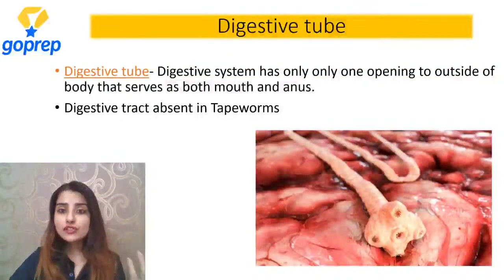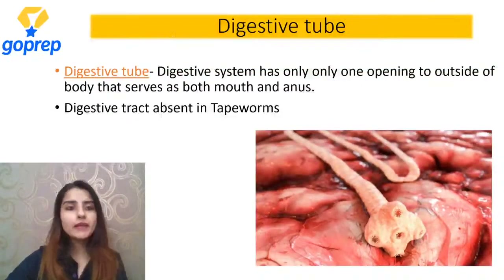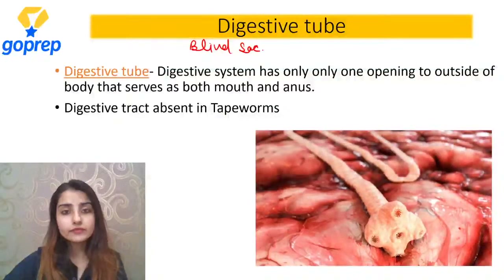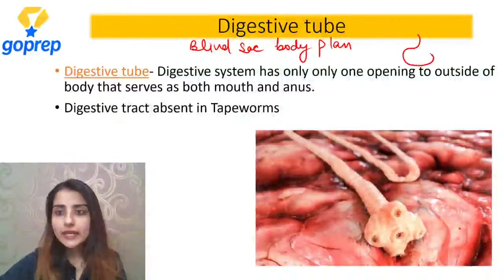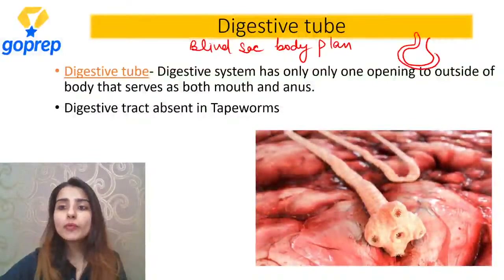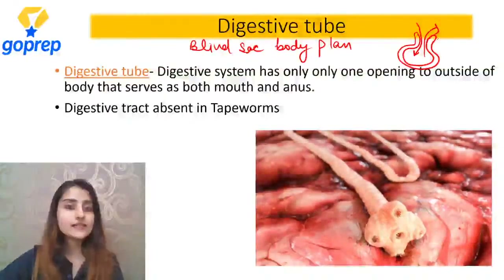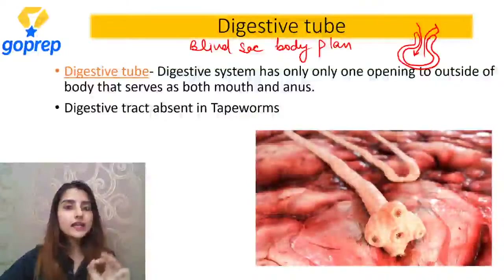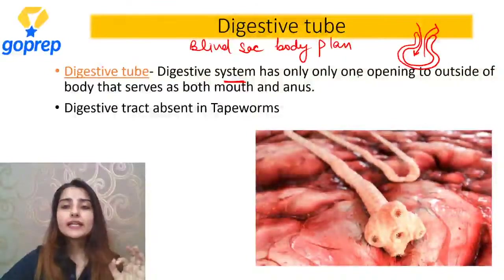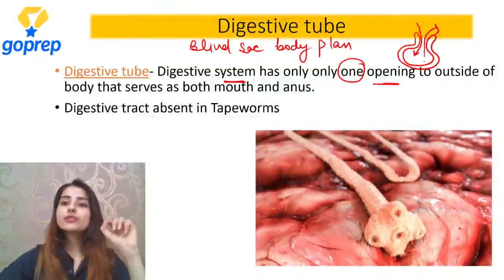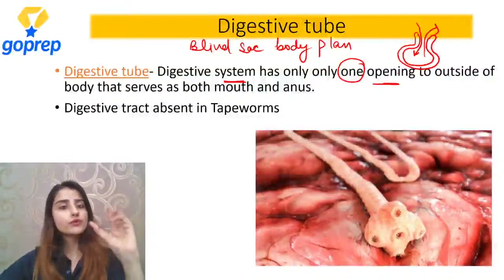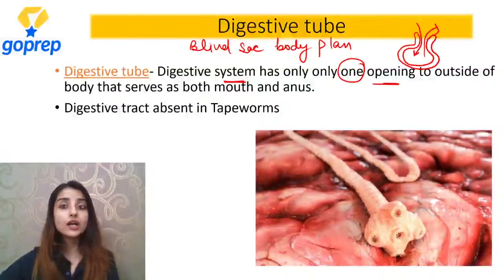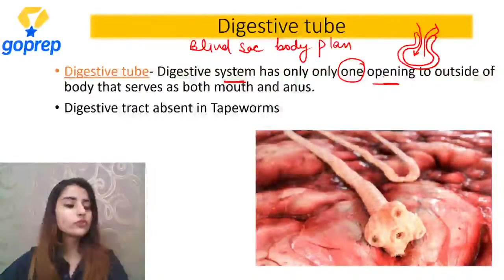Next, talking about their digestive tube. In ke paas kaisa body plan hai? Blind sack body plan. The type of body plan is blind sack body plan. The plan in which there is a single opening to the outside - isi jagah se substances enter karte hain aur exit karte hain. This type of body plan is called blind sack. Their digestive tube has only one opening to the outside, which serves as both mouth and anus. Isse agle phylum mein tube-within-tube hoga - mouth separate, anus separate. But here there is no anus.